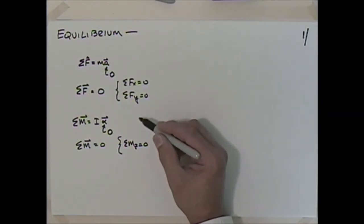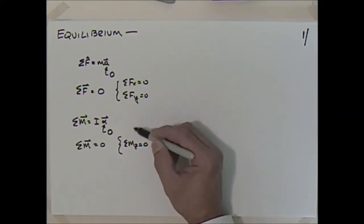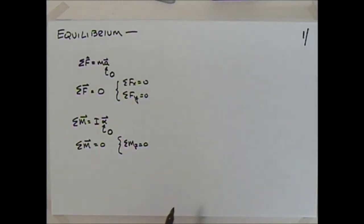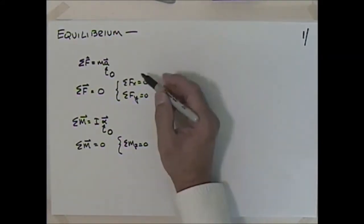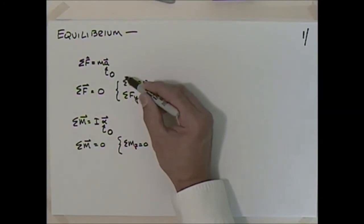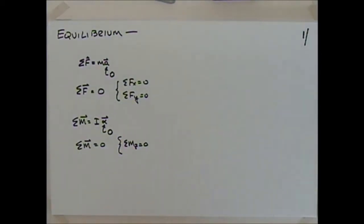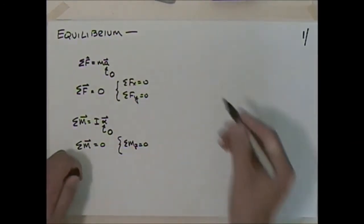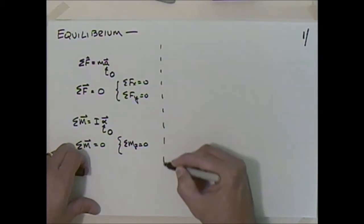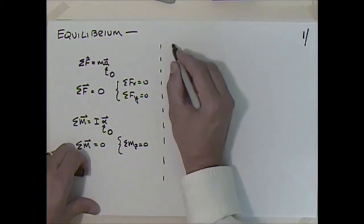For many problems we'll use these three equations: sum of forces in x, sum of forces in y, and sum of moments about z. We have to be careful to include all forces and moments. If we leave off just one, we'll get a wrong answer. So we need a tool to help with proper accounting of forces — that tool is called a free body diagram.